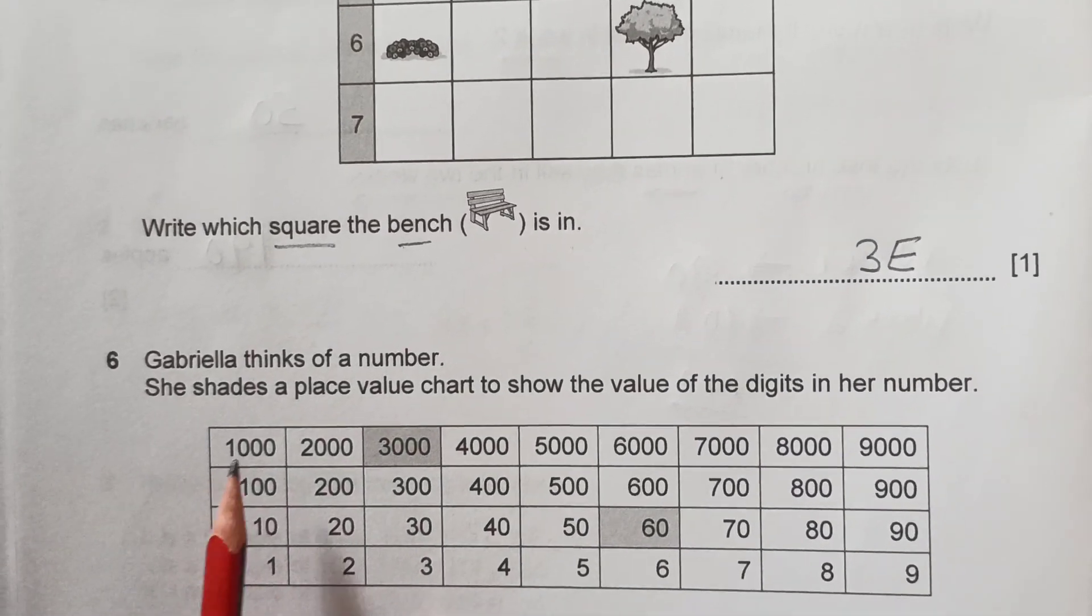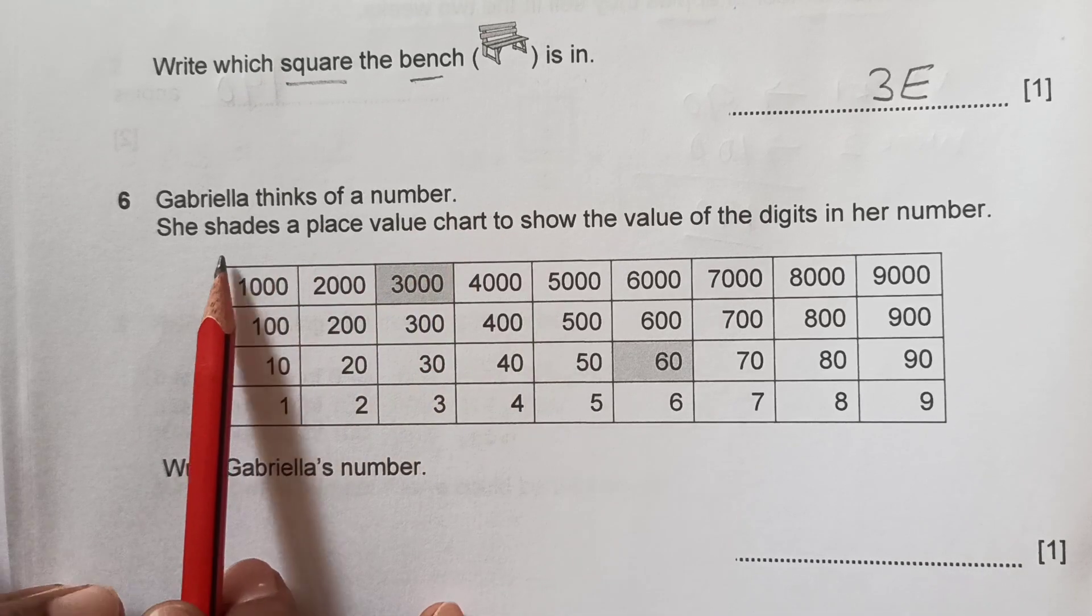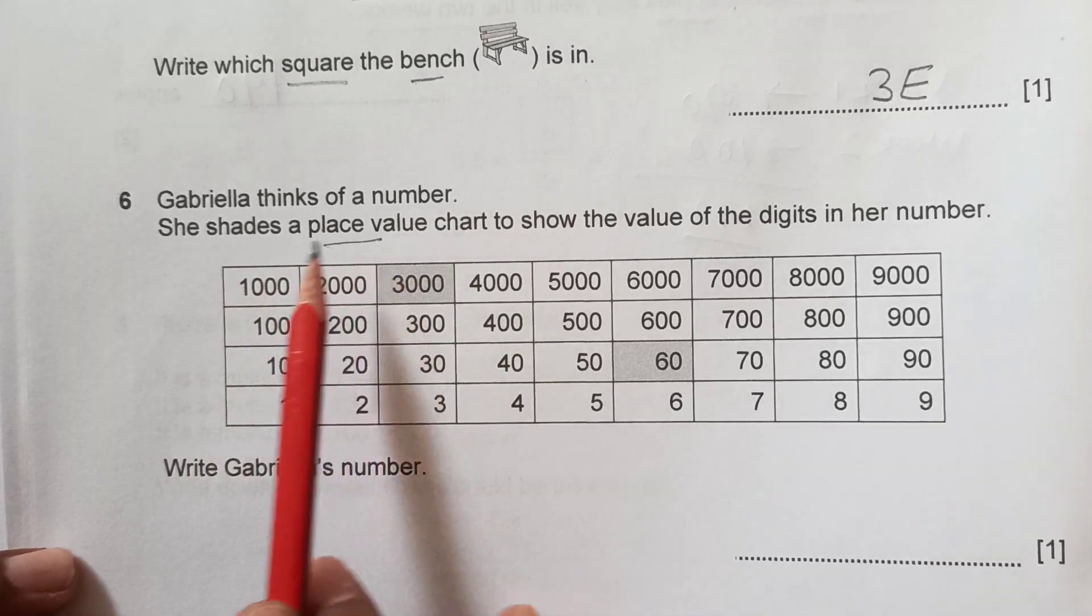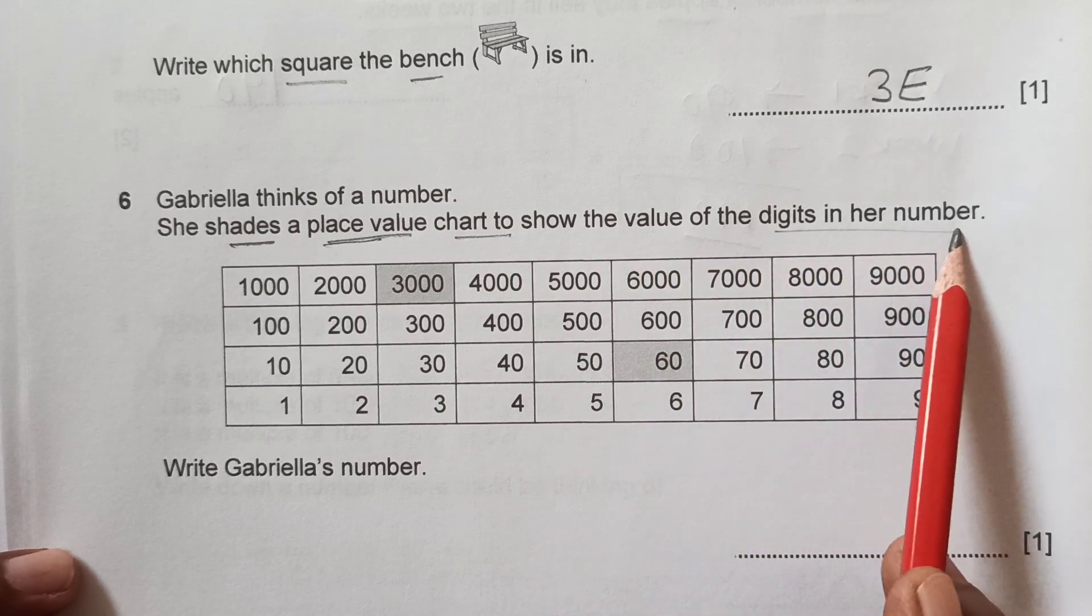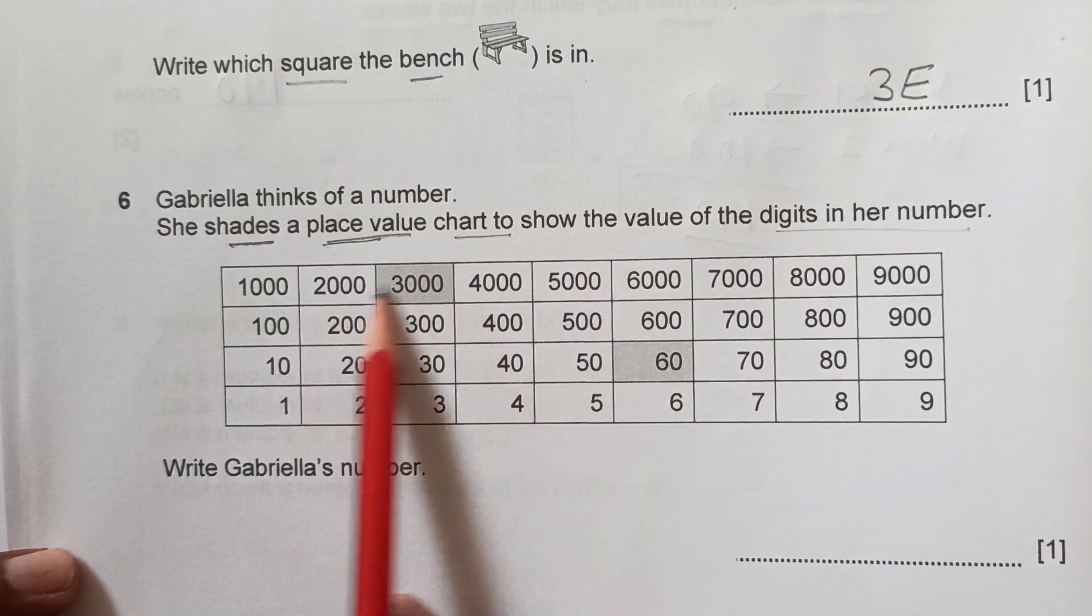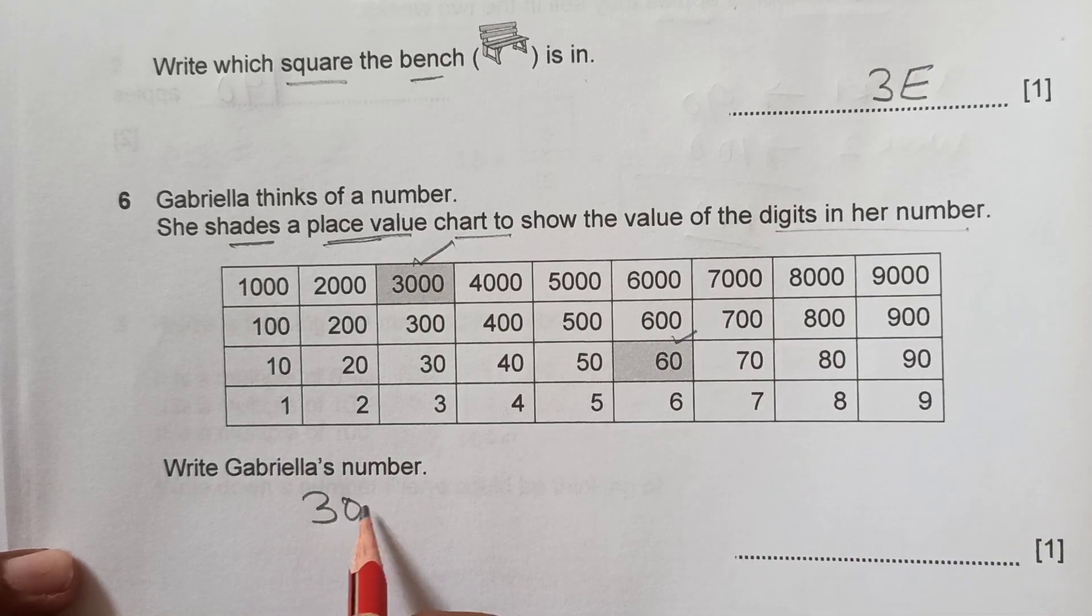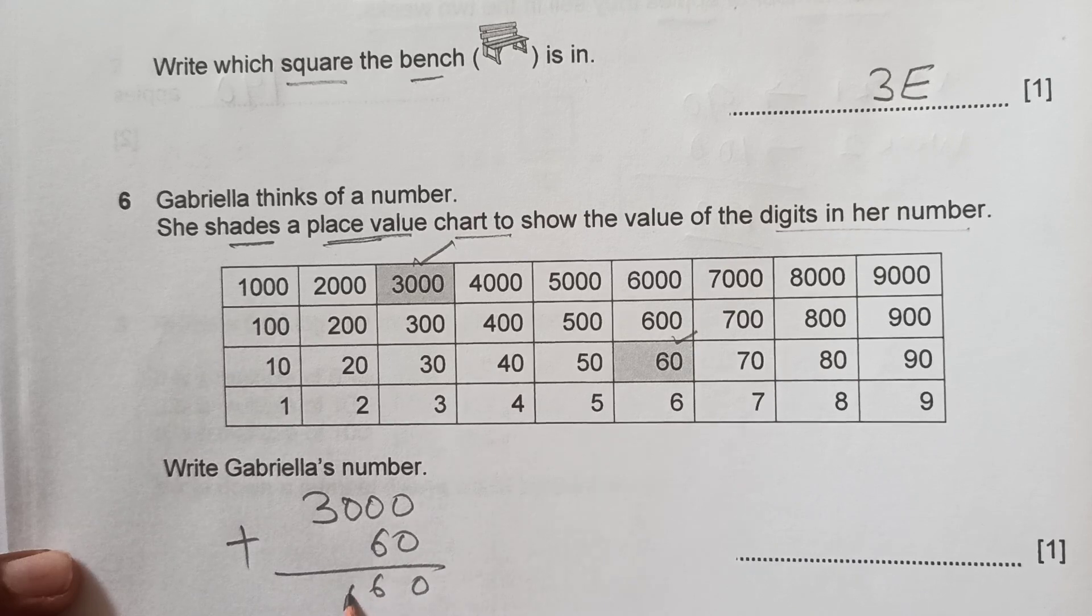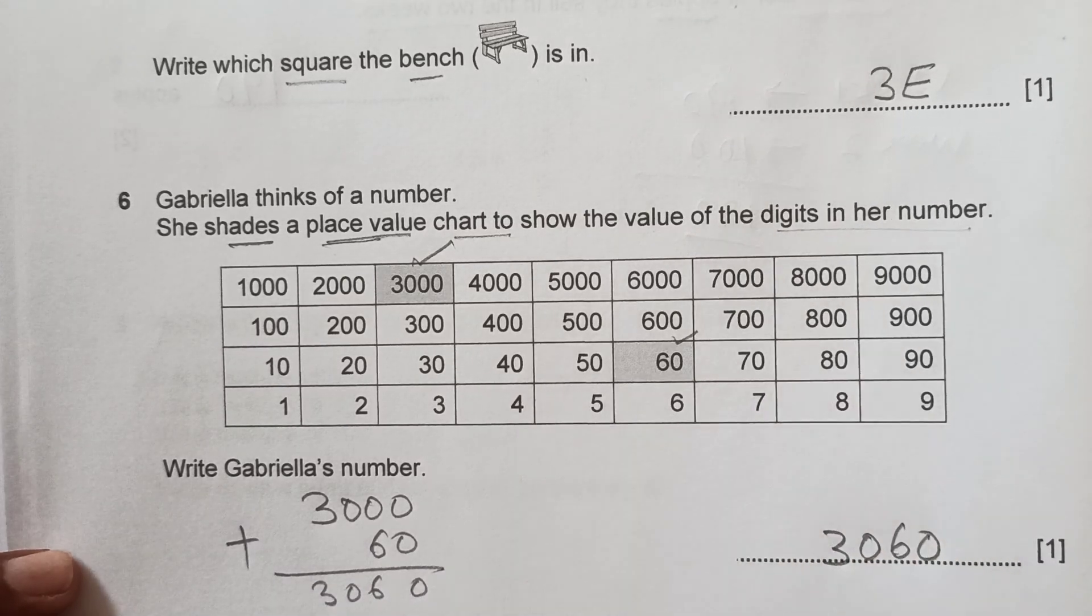Now number 6: Gabriela thinks of a number. She shades a place value chart to show the value of the digits in her number. We see the shaded one is here, 3,000 and 60. 3,000 plus 60, this is her number.